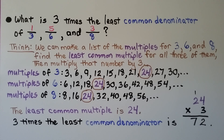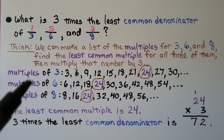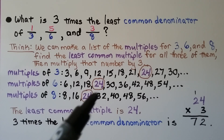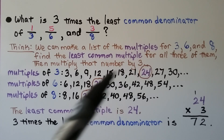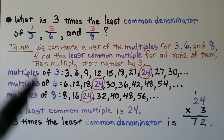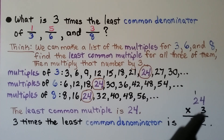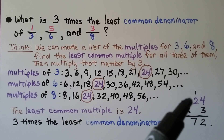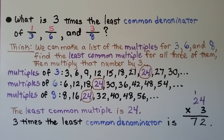What is 3 times the least common denominator of 1/3, 5/6, and 3/8? We can make a list of the non-zero multiples for 3, 6, and 8 and find their least common multiple for all three, then multiply that number by 3. We list the multiples of 3, 6, and 8 and find that 24 is the least multiple they have in common. We do 3 times 24: 3 times 4 is 12, we regroup the 10 and put the 2 in the ones place, 3 times 2 tens is 60, and 1 more is 70 — put a 7 in the tens place. So 3 times the least common denominator is 72.